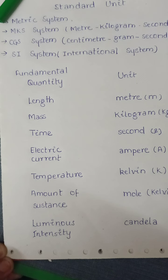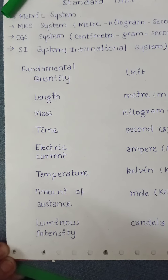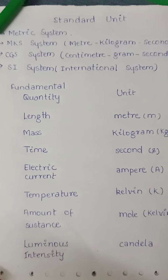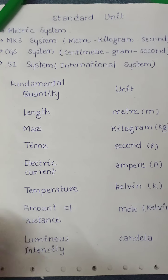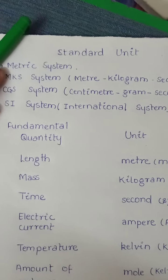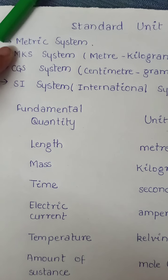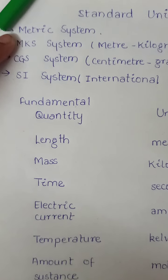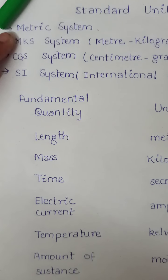Those units which are accepted universally are called standardised units. Standardised units are defined by many types of system. The first system is the metric system. In 1791, the French Academy of Sciences developed a system of measurement which was not only simple but also scientific.